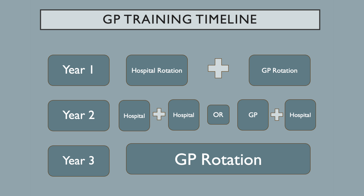As you can see from this timeline, the GP training program is broken down into six six-month rotations. In your first year you'll typically do one rotation in a hospital setting and one rotation in a GP setting. In the second year you'll either do two six-month rotations in a hospital setting or one six-month rotation in a hospital setting and one in general practice. And then in your final year you'll do 12 months in a general practice.